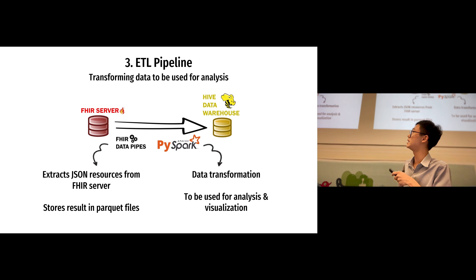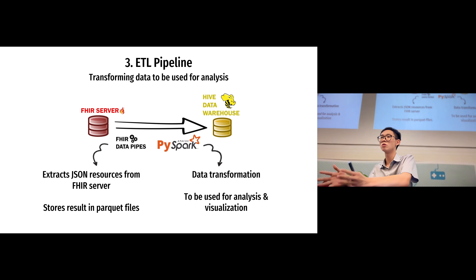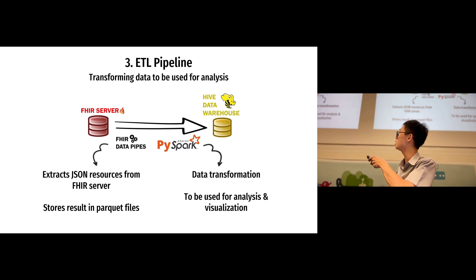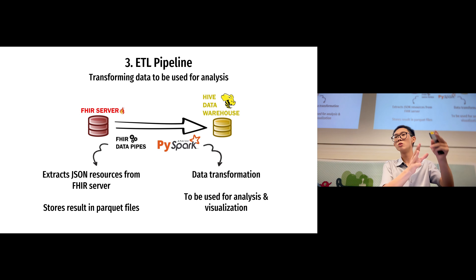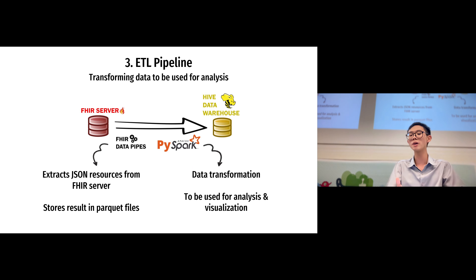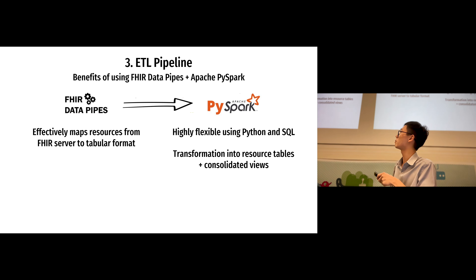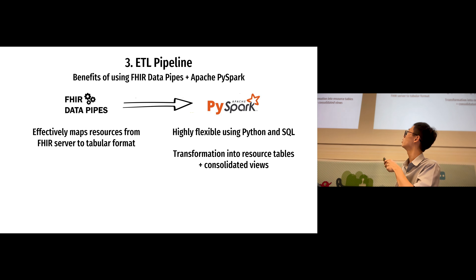Now we move on to the ETL pipeline. My ETL pipeline takes data from the FHIR server, transforms it, and loads it into the Apache Hive data warehouse. The ETL pipeline involves two major components: FHIR data pipes and PySpark. In the FHIR server, resources are stored as JSON files, which are very deeply nested. FHIR data pipes has inbuilt mapping and can take all those resources and convert them into a tabular format, which makes it much easier for analysis and transformation. When it becomes tabular, we put it into PySpark, where we can use Python and SQL.